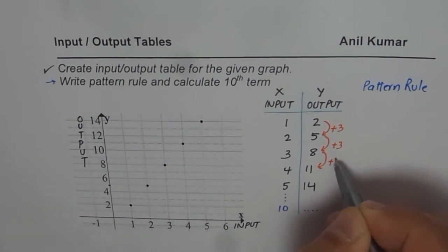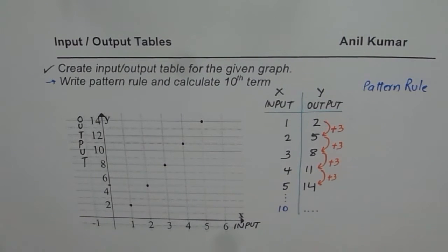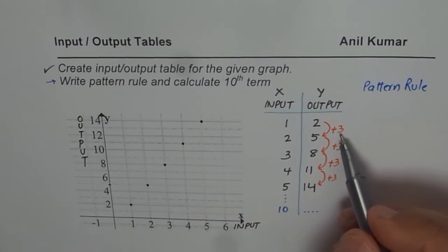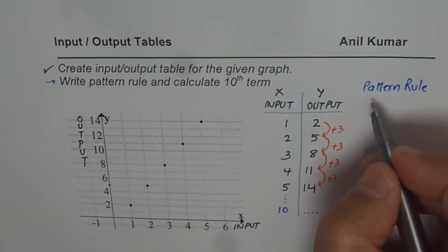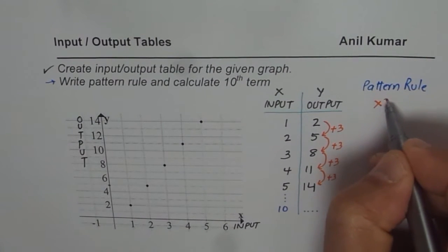Now, that gives us a pattern rule. So pattern rule has to do something with 3. And when they increase by 3 each time, increase by 3 each time means multiply by 3. So in pattern rule, we have times 3 for sure.